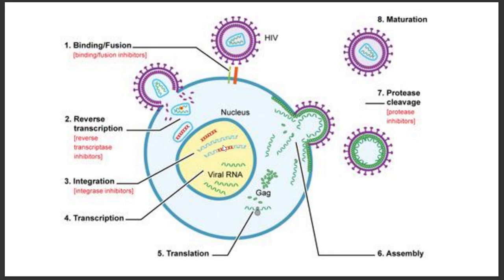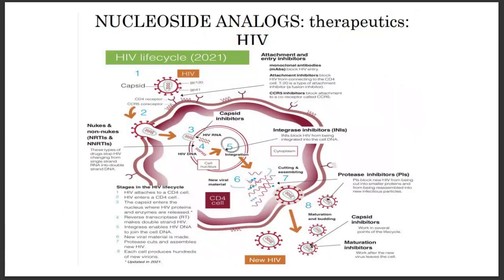Even if the viral and host DNA have already merged, the DNA still undergoes transcription to form RNA and then translation to form viral proteins, which are released outside the cell. To prevent the formation and accumulation of these viral proteins, protease inhibitors are used. These represent the various stages at which analogue inhibitors can be used to fight the virus.